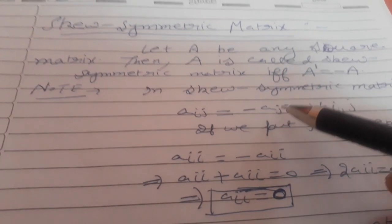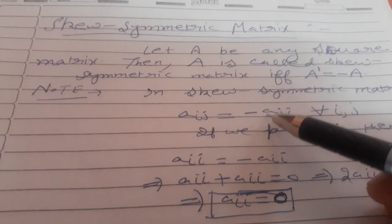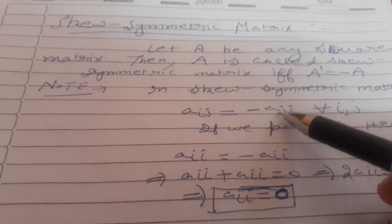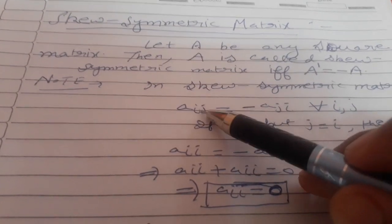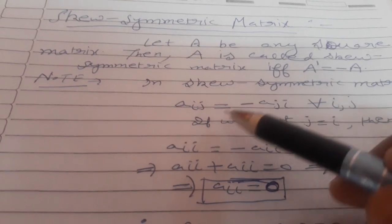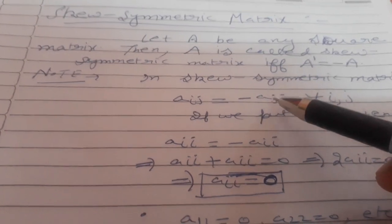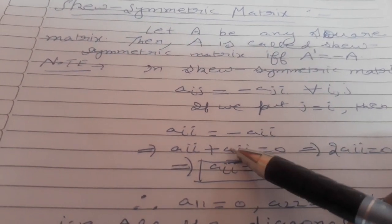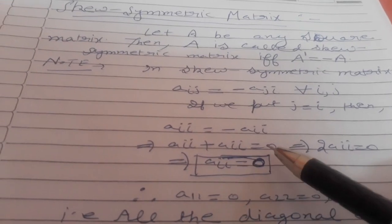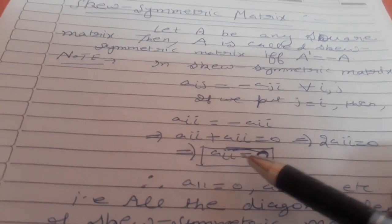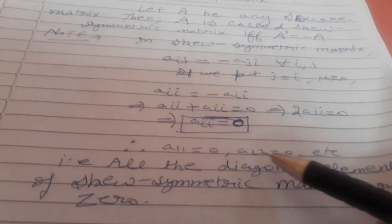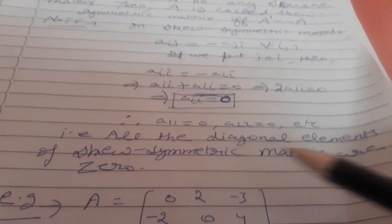So A12 will be equal to minus A21, and A13 will be equal to minus A31. Now regarding diagonal elements: diagonal elements are A11, A22, etc. Putting j equal to i, we get Aii equals minus Aii, which gives 2·Aii = 0, so Aii = 0. This means all diagonal elements of a skew-symmetric matrix are zero.